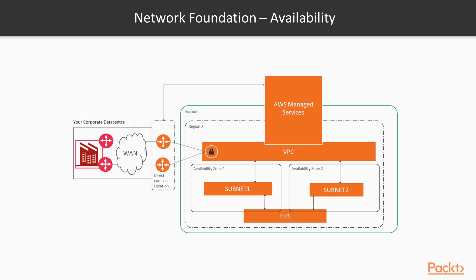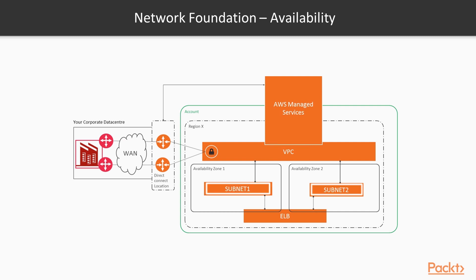You also want to think about how you connect your corporate data centre into your network. Direct Connect connects into your VPC, giving you access to AWS services as well as services running within your VPC. Having multiple resilient endpoints and multiple resilient routers on your side is part of the Direct Connect architecture. High availability is only as good as your availability design at the network level, so having multiple Direct Connect locations, multiple WAN routers, multiple VPCs, and multiple subnets is all part of a resilient high availability design.